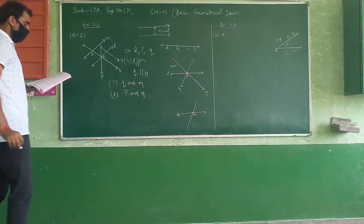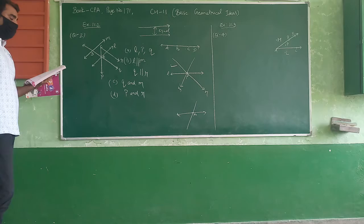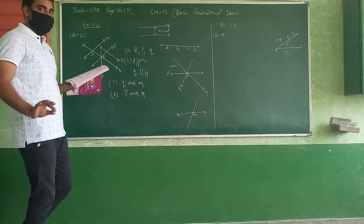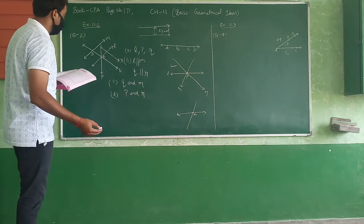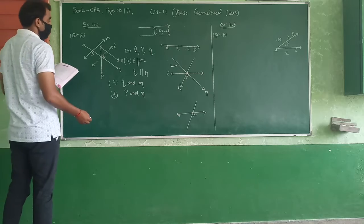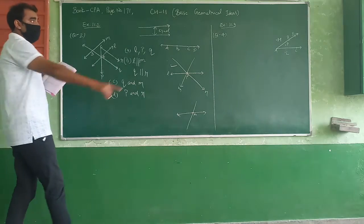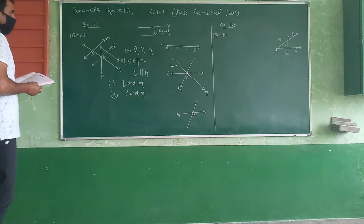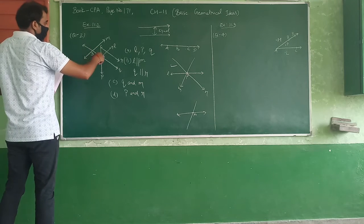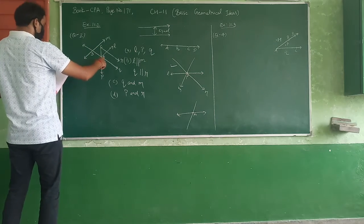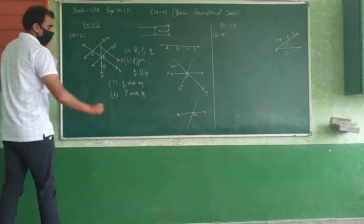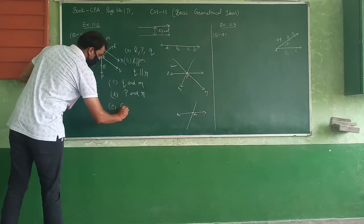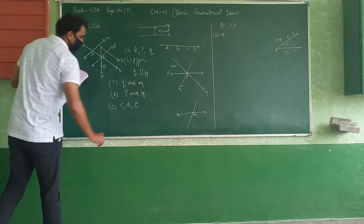Okay, E: Identify three collinear points. Three collinear points - what are collinears? They lie on the same line, which are C, A, E. Here is one more point D. So C, A, E.